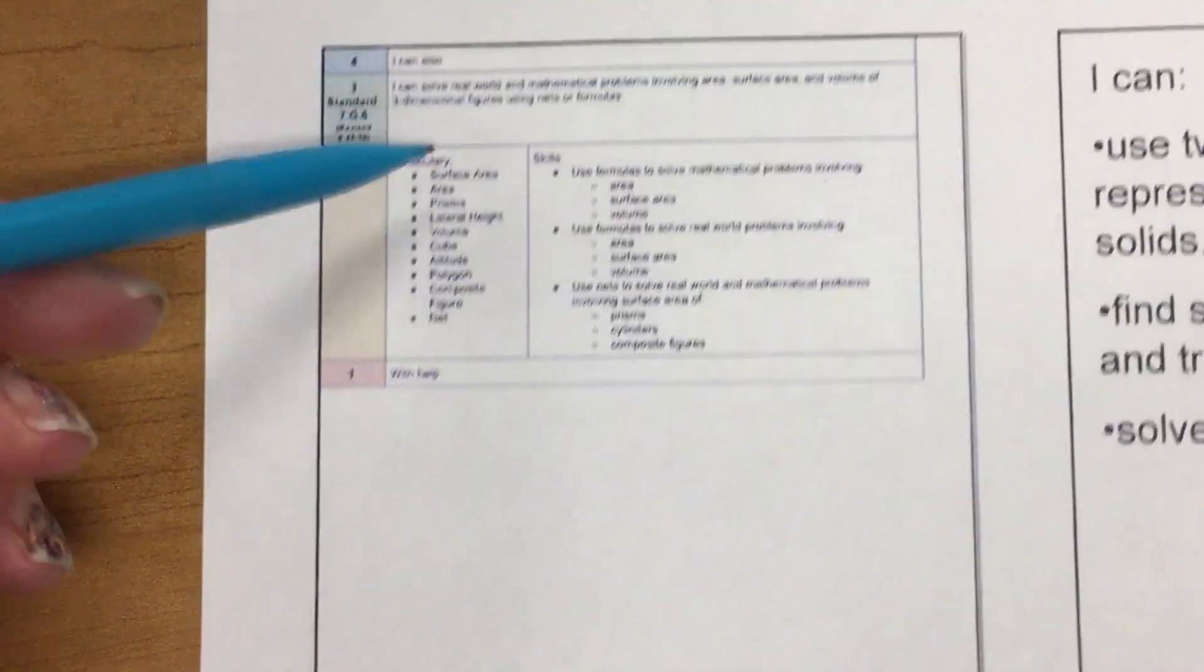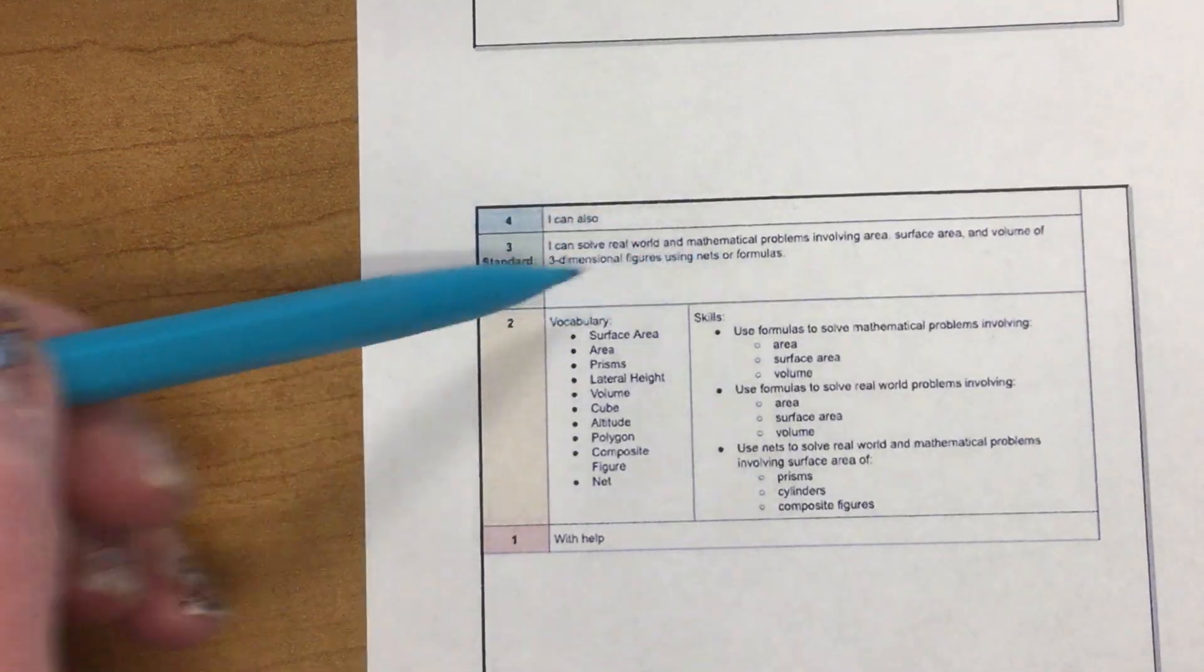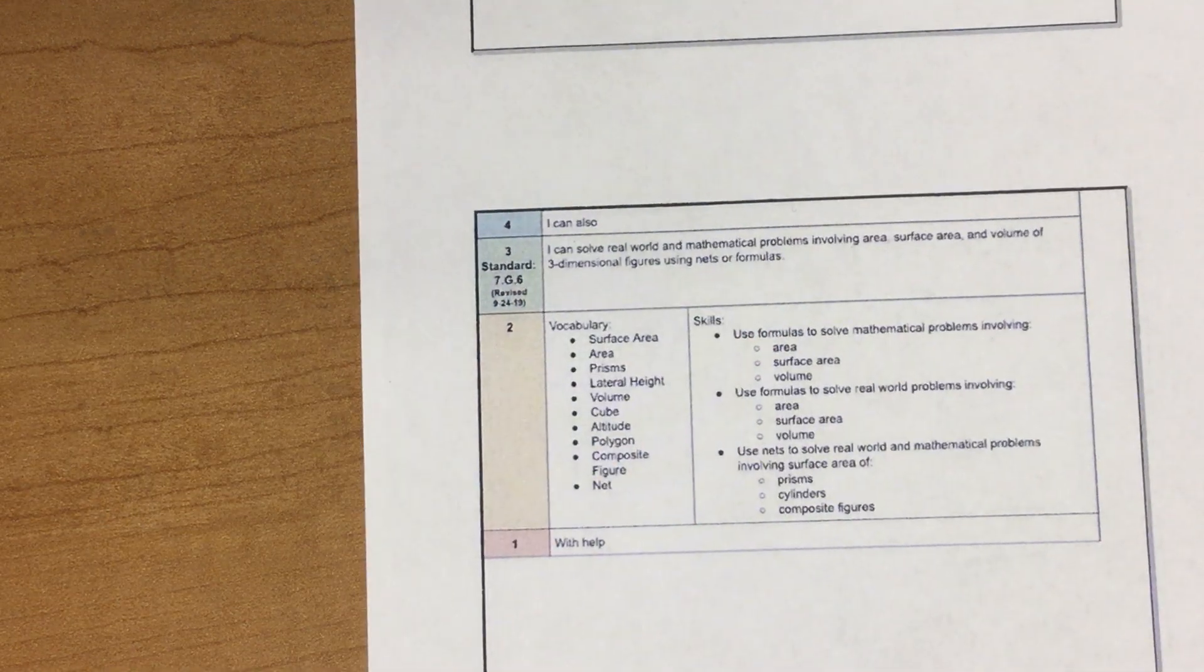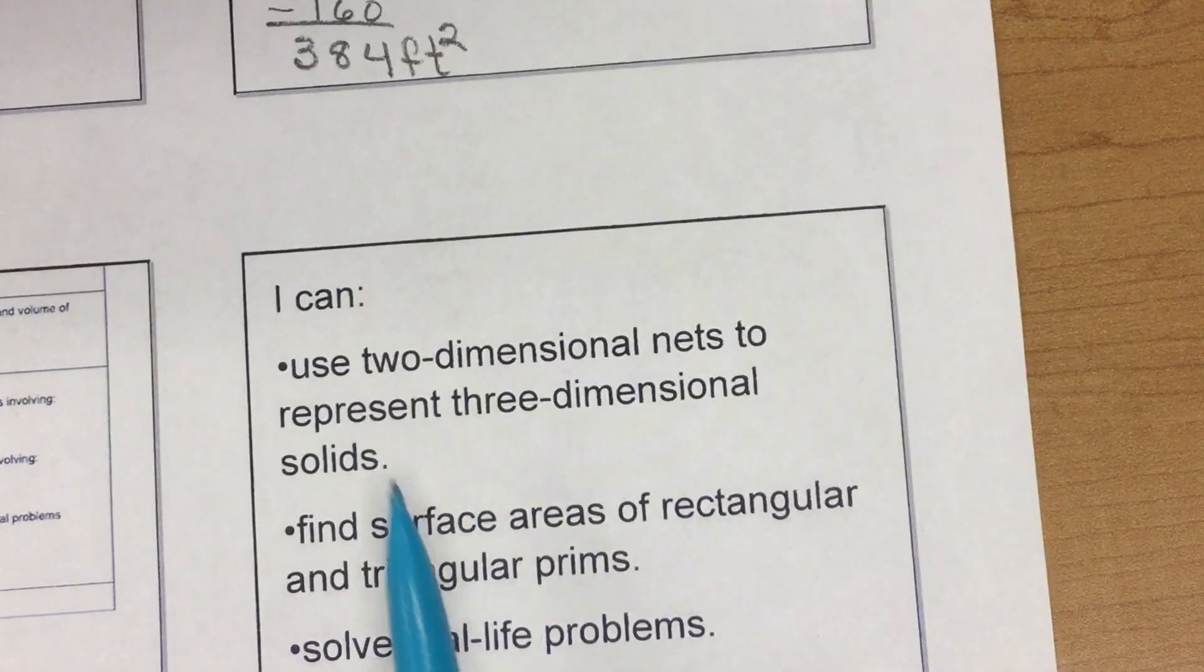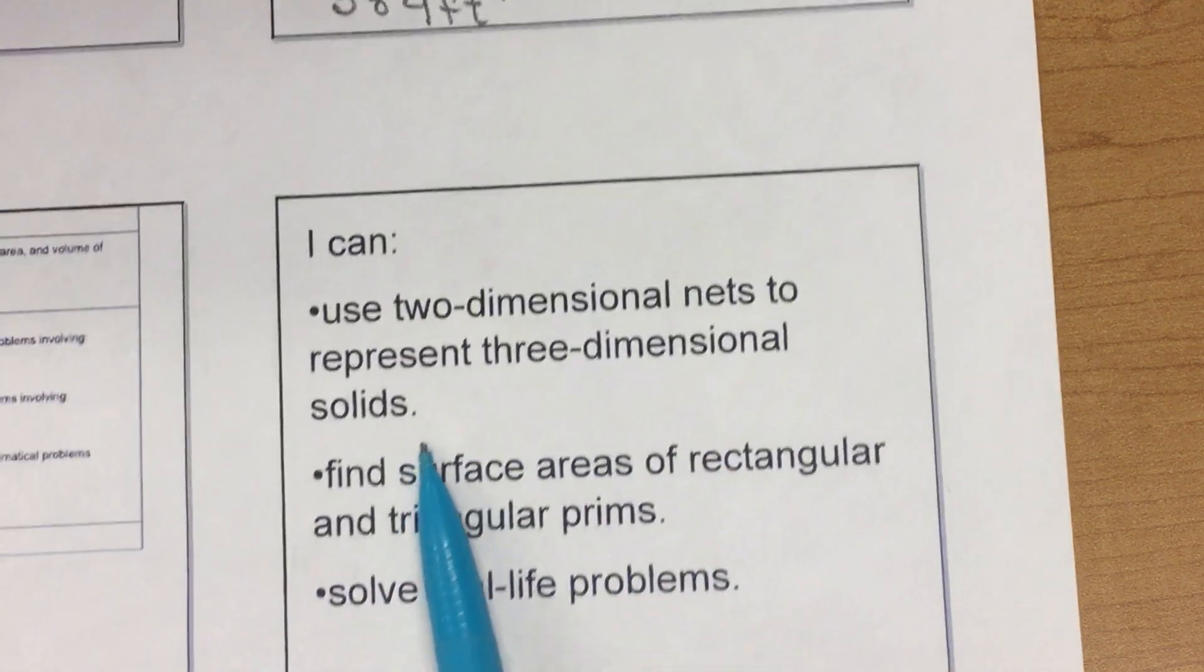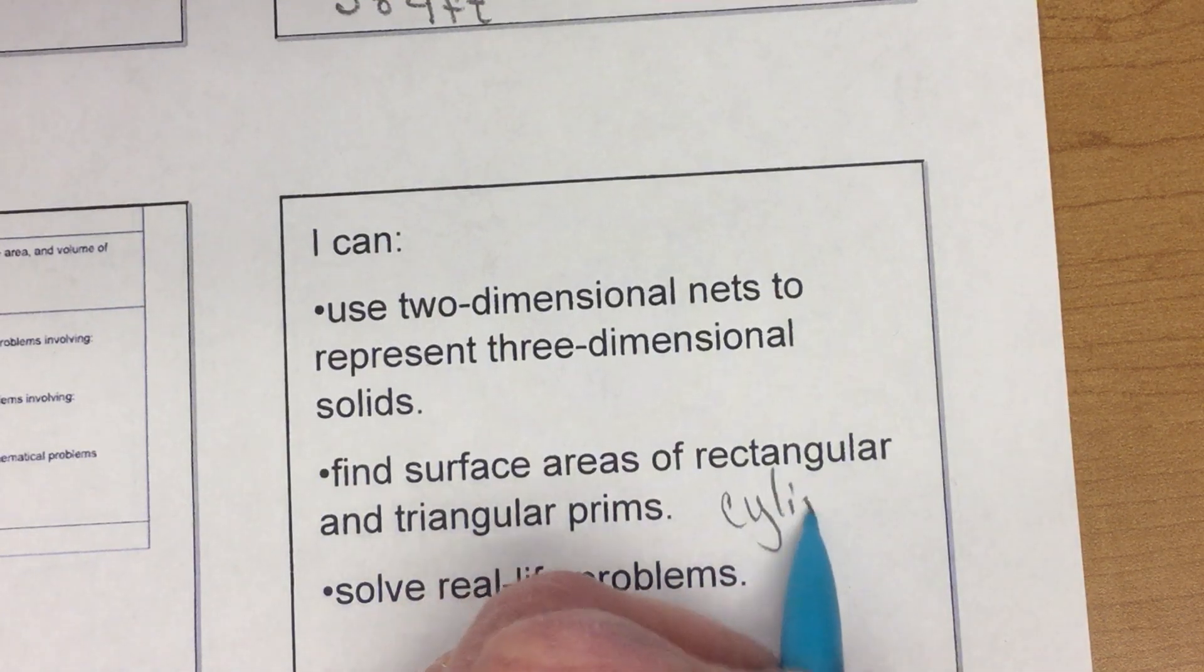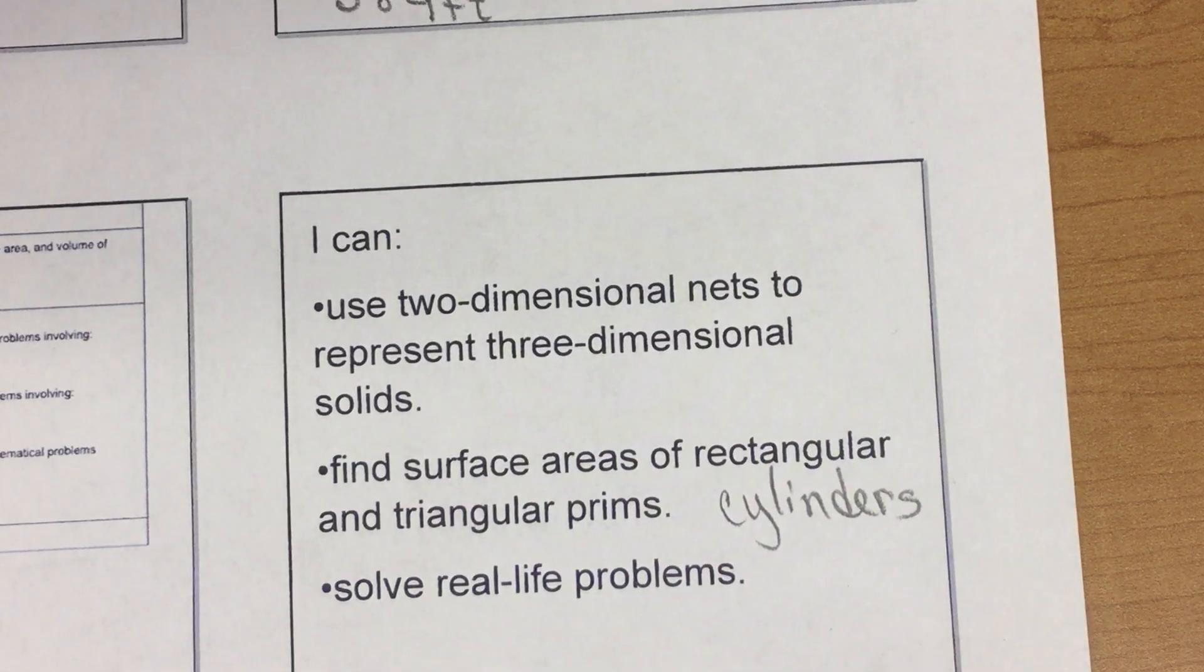So, looking at our standard again, are we confident that I can use story problems, real world problems to find surface area of prisms and cylinders? So, the ICANs, I can use two-dimensional nets to represent three-dimensional solids. I can find surface area of rectangular and triangular prisms and cylinders. And I can solve real-life problems.